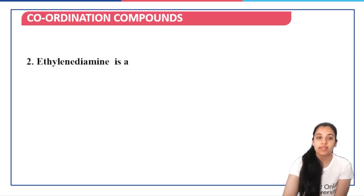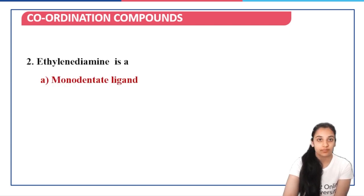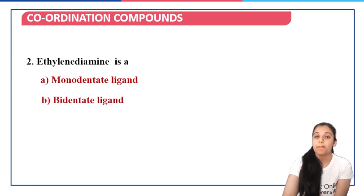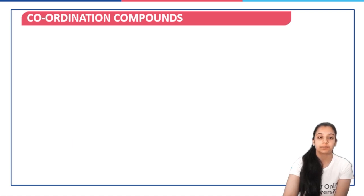Question 2: ethylenediamine — remember the structure: one ethylene group with NH2 groups attached to each of the two carbon atoms. Since there are two nitrogen donor atoms, it is a bidentate ligand. Option B is the right answer.